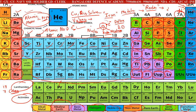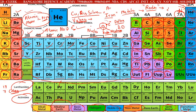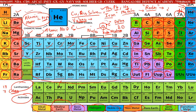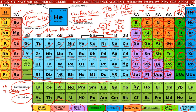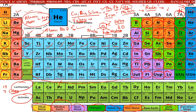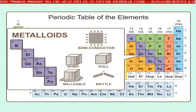Why did I read out all these elements? Because in your examination they may ask what AU stands for, what PB stands for, what HG stands for. AU stands for aurum, also called gold. HG stands for hydrargyrum, which stands for mercury. So here we've seen inert gases, halogens, semi-metals, and in the next slide we'll understand metals, non-metals, and metalloids.